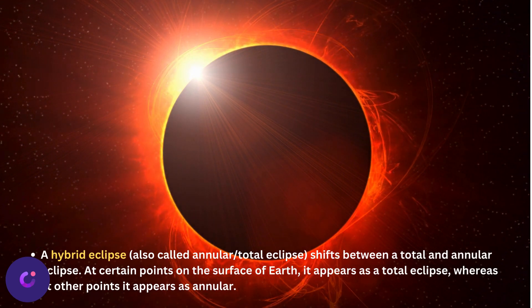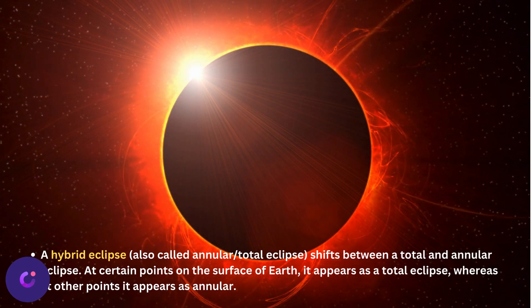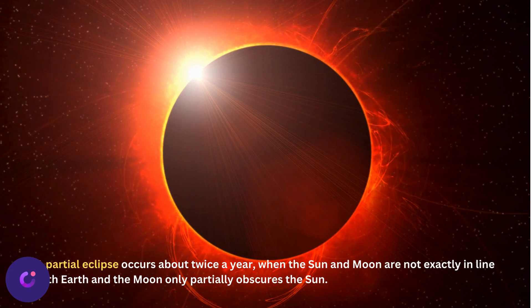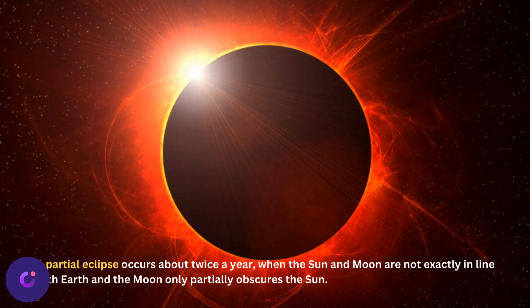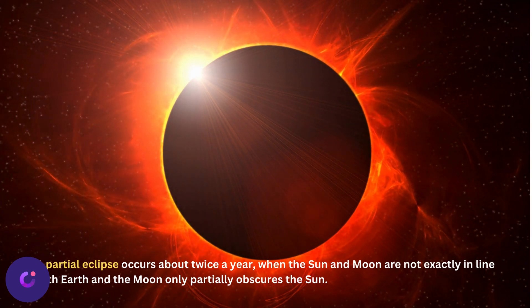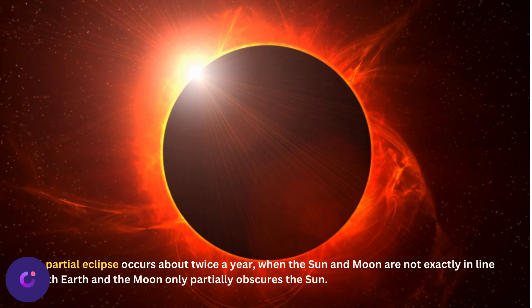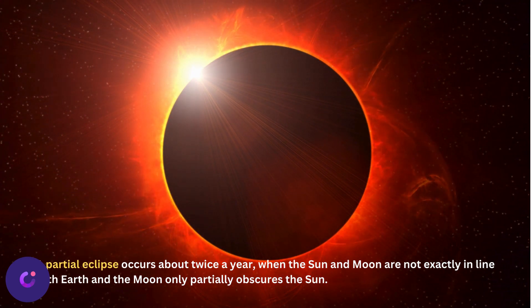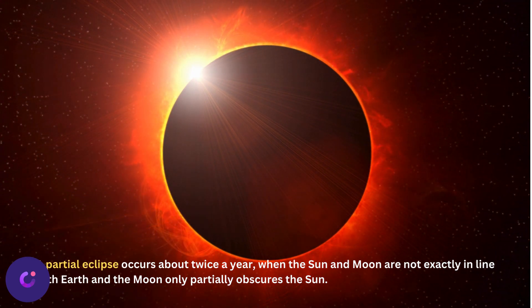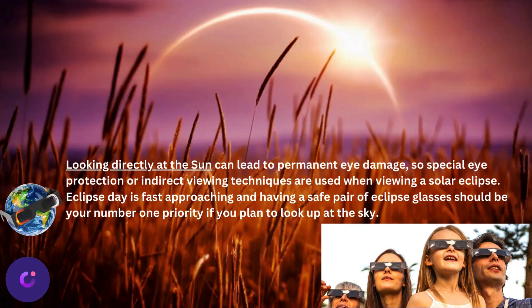A partial eclipse occurs twice a year when the sun and moon are not exactly in line with earth and the moon only partially obscures the sun.